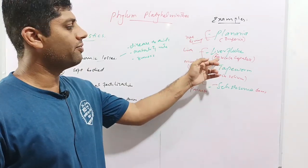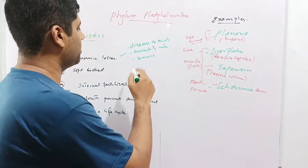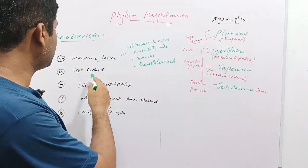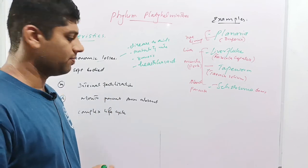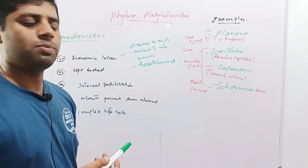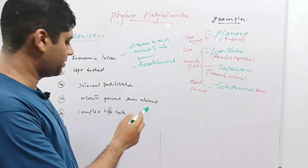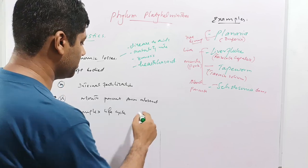These animals are soft-bodied. Their fertilization is internal—the union of sperm and ovum takes place within the body. Mouth is present but anus is absent. These animals have complex life cycles comprising larval stages. One or two larval stages are there in Platyhelminthes and constitute the complex life cycles of these worms.